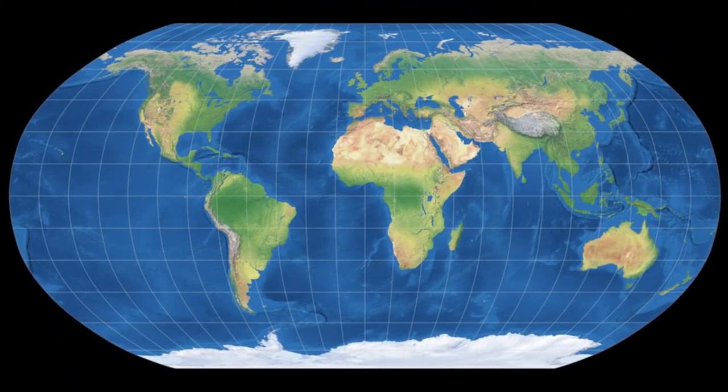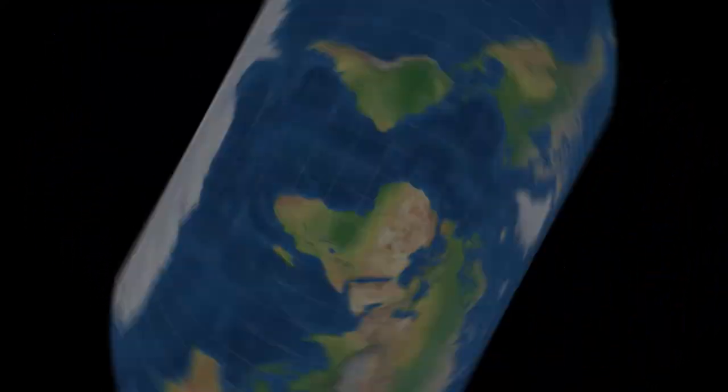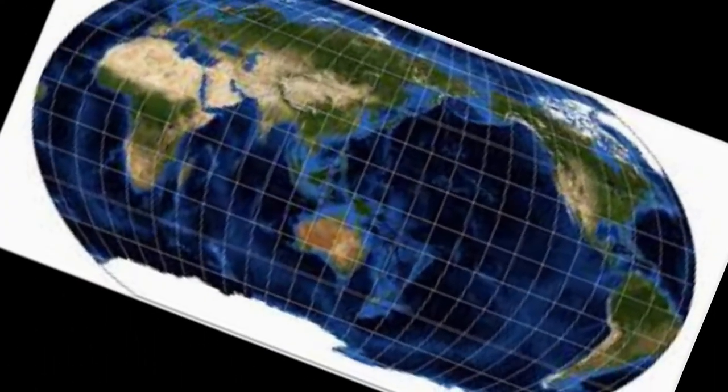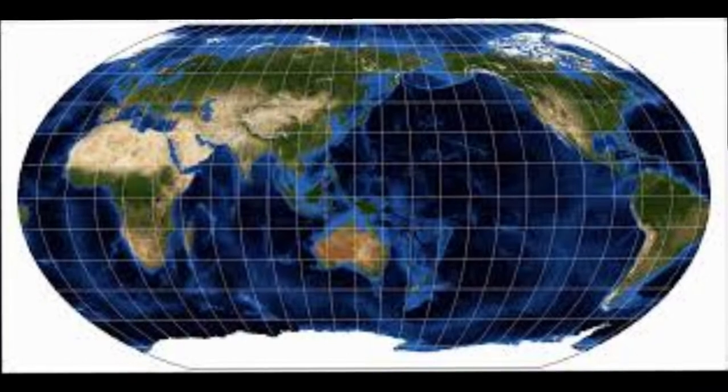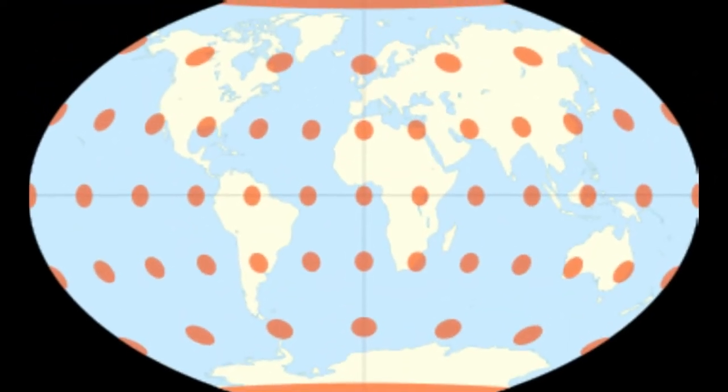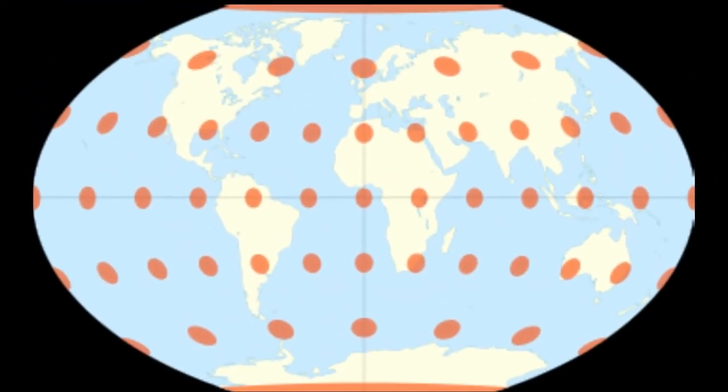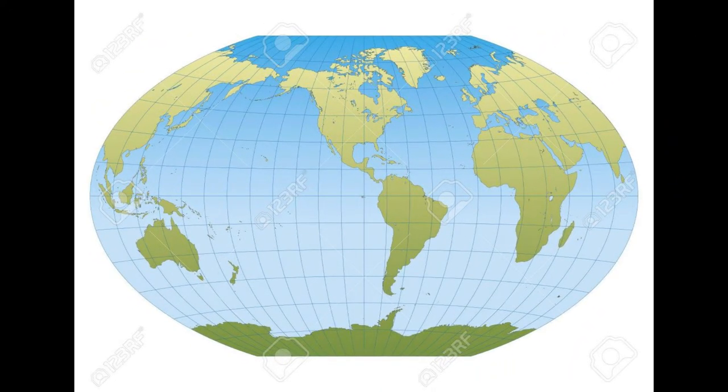Next most popular map projection is Winkel Tripel. The map projection was proposed by German cartographer Oswald Winkel in 1921. The Winkel Tripel projection is quite the opposite of Robinson. The map resorts to mathematical compromises of two major types of projections: area, direction, and distance.